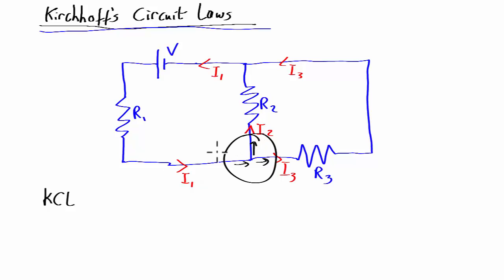So if we're going out of a loop to a junction, it must sum to zero. So in this case, what that's telling us is we've got I1 coming in and we've got I2 and I3 going out, so you've got minus I2 and minus I3 coming in equals zero. We'll rearrange it: I1 equals I2 plus I3, telling you the amount of current in equals the amount of current coming out.